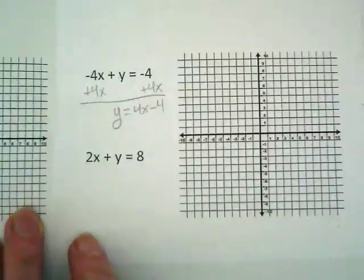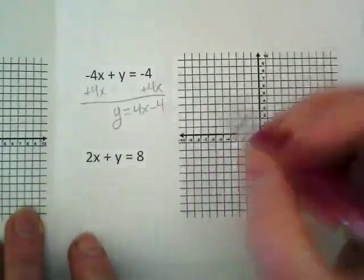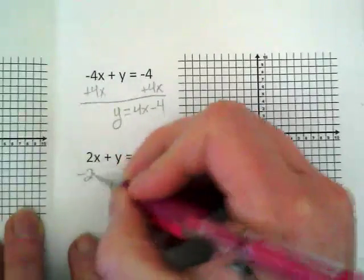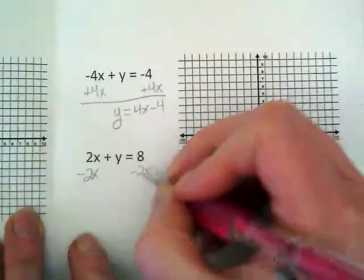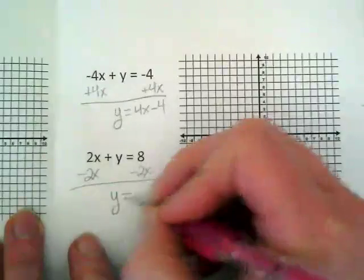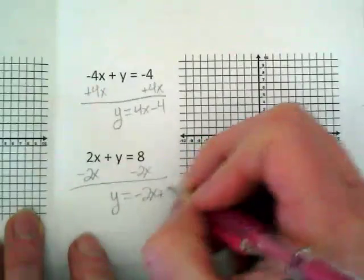I personally like to take care of both equations and then do the graphing. It doesn't matter if you wanted to do the graphs now. We're going to subtract this 2x from this equation, and we get y is equal to negative 2x plus 8.